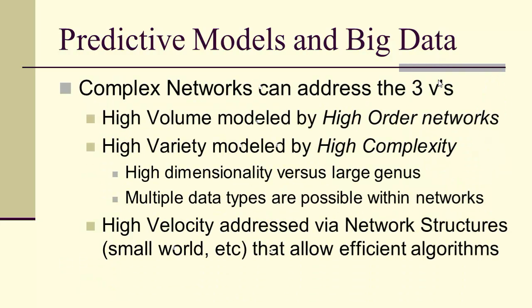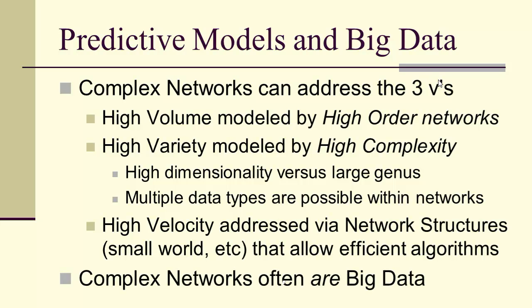Complex networks can address the three Vs: high volume modeled by high-order networks, high variety by highly complex networks with large genus and multiple data types. High velocity can be addressed via network structures — small world, et cetera. In fact, complex networks often are themselves big data.